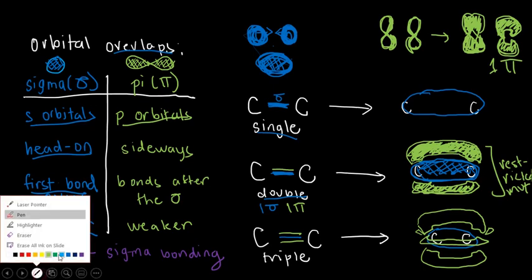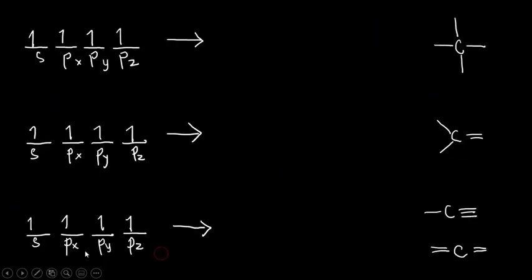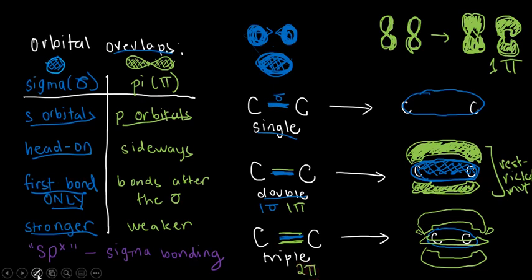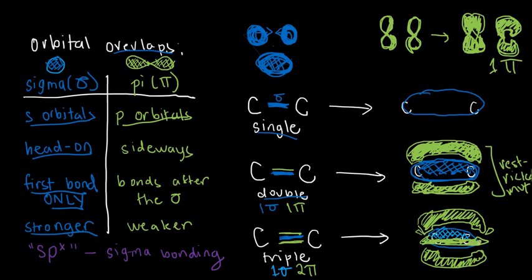For a triple bond, it's an extension of the double bond. The sigma bond is always the first and only sigma — there is only one sigma per bond connection. The other two bonds are pi bonds, so a triple bond is composed of 1 sigma and 2 pi. The sigma bond is at the center. The first pi bond occupies above and below. The second pi bond must be perpendicular because there's no other space available — it lies flat, with one lobe at the front and the other lobe at the back.